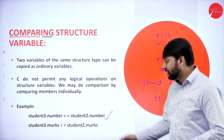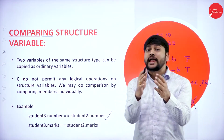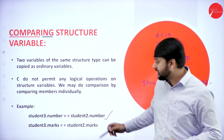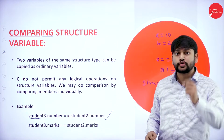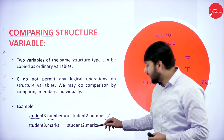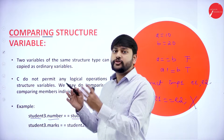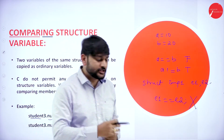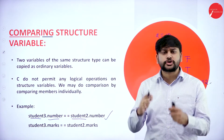So how do you compare structures? You have to do it member by member. For example, student3.number == student2.number is a valid statement. student3 is one structure variable and student2 is another. This is a valid statement for comparing members of two different structure variables, and this is how we compare structures.